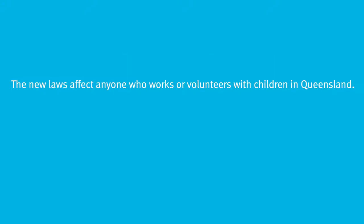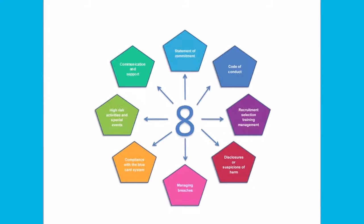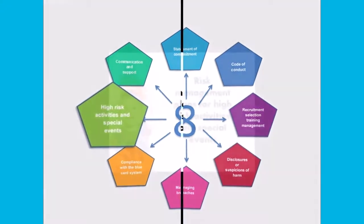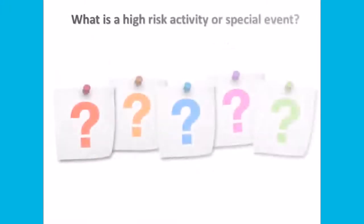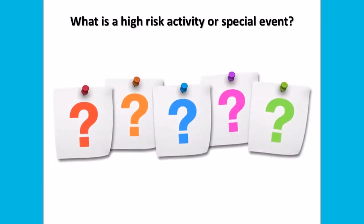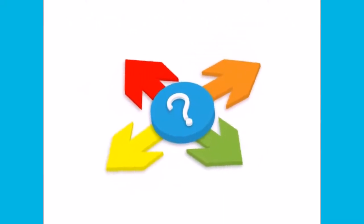All organizations falling within the scope of the blue card system are required to develop and implement child and youth risk management strategies which address eight minimum requirements. This video will guide you through the seventh of the minimum requirements, which is the requirement to have risk management plans for high-risk activities and special events. You may be wondering what is a high-risk activity or a special event.